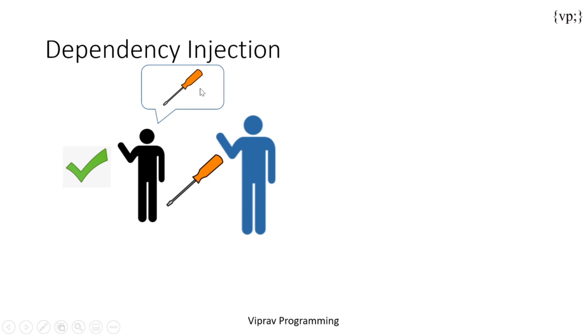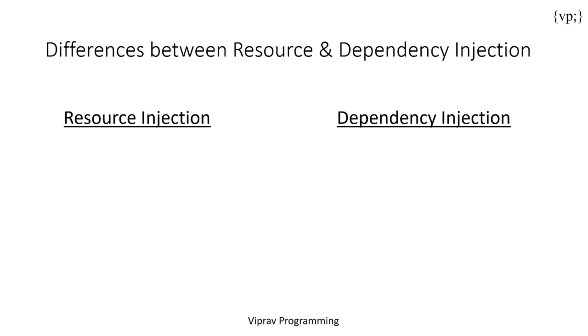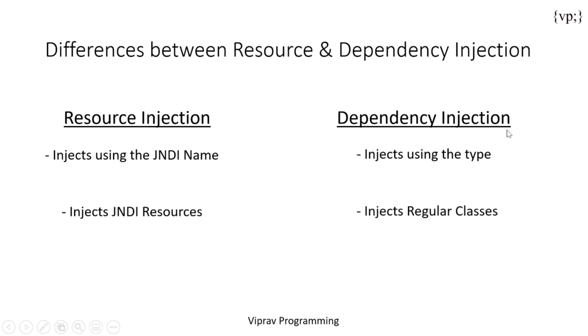Now to go over again, the differences between resource and dependency injection. Resource injection uses the JNDI name, which means that your resources are named using the JNDI format and your container takes those resources through the JNDI name. Dependency injection, however, uses the type which you have to provide on your own. So resource injection also injects using the JNDI resources, so the resources that are named with JNDI. And dependency injection can inject any regular class. And resource injection is not type safe and dependency injection is type safe.